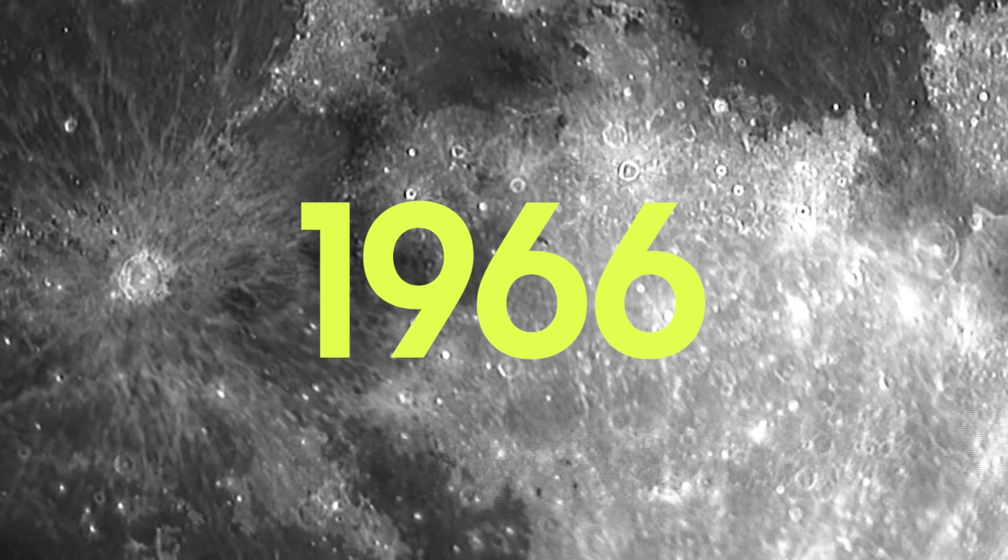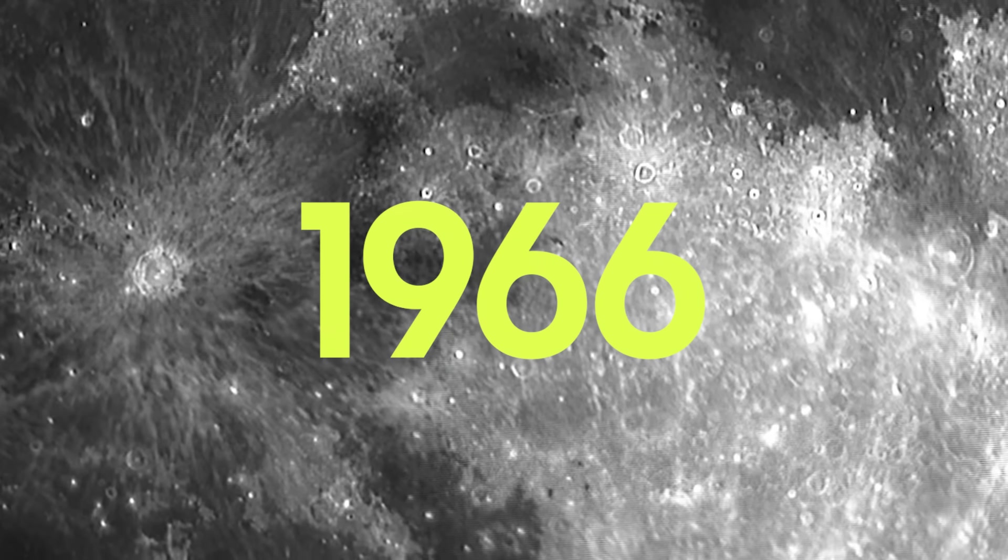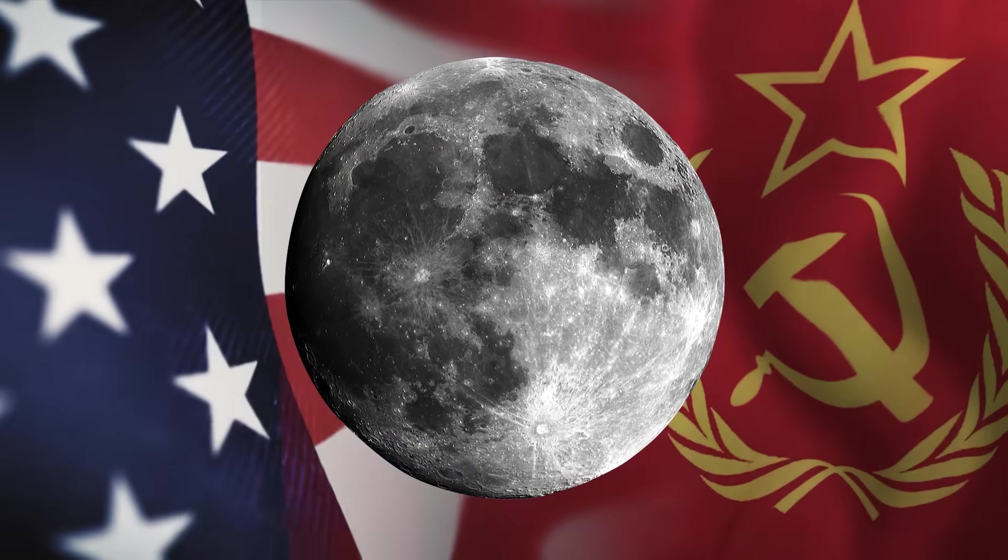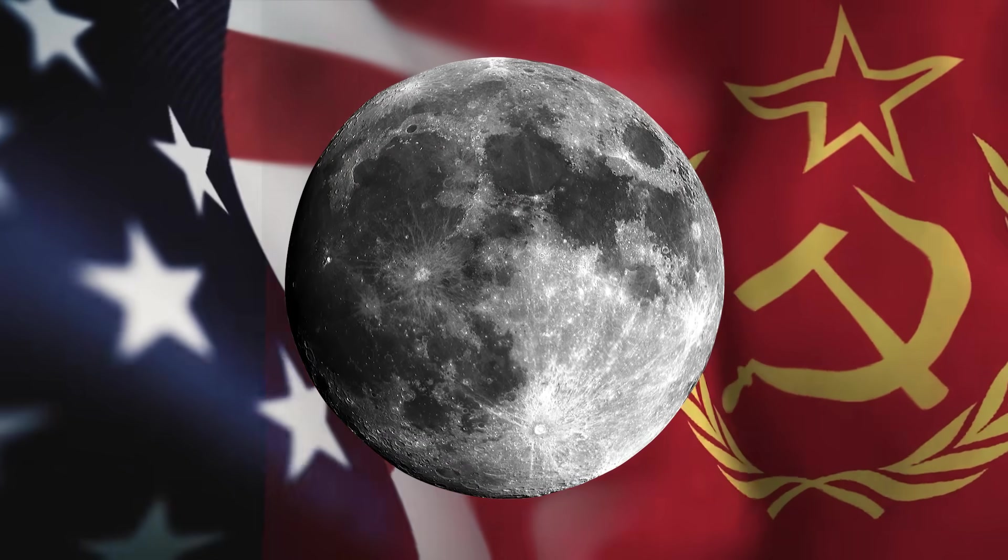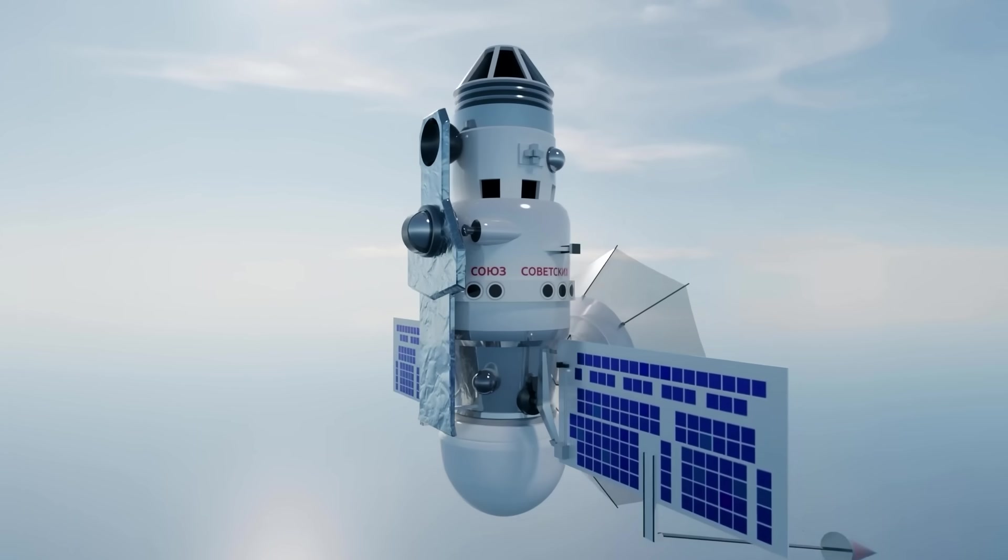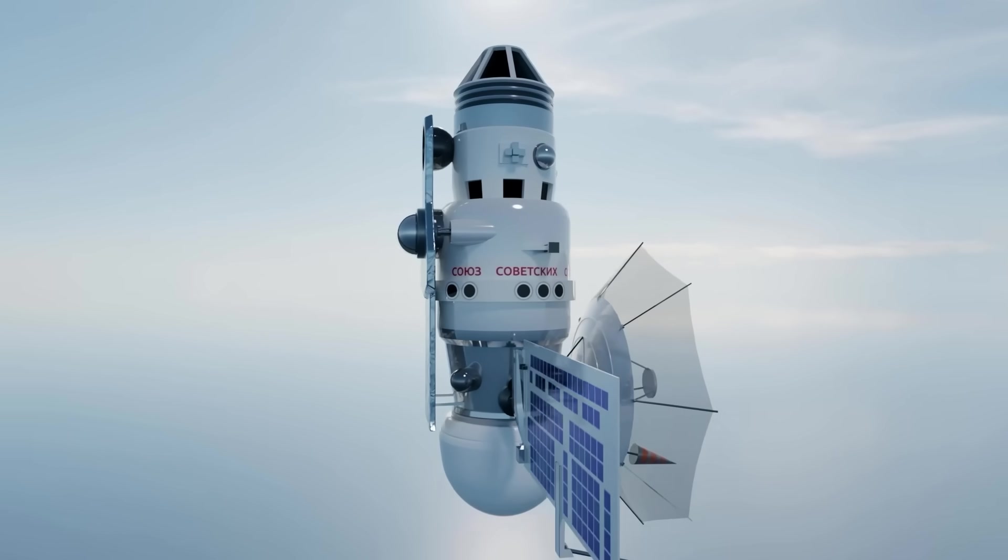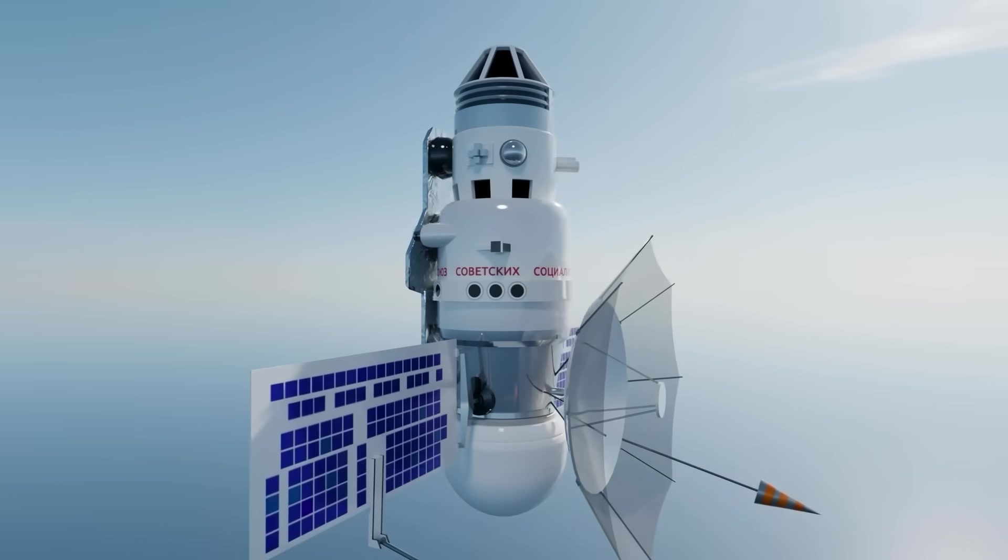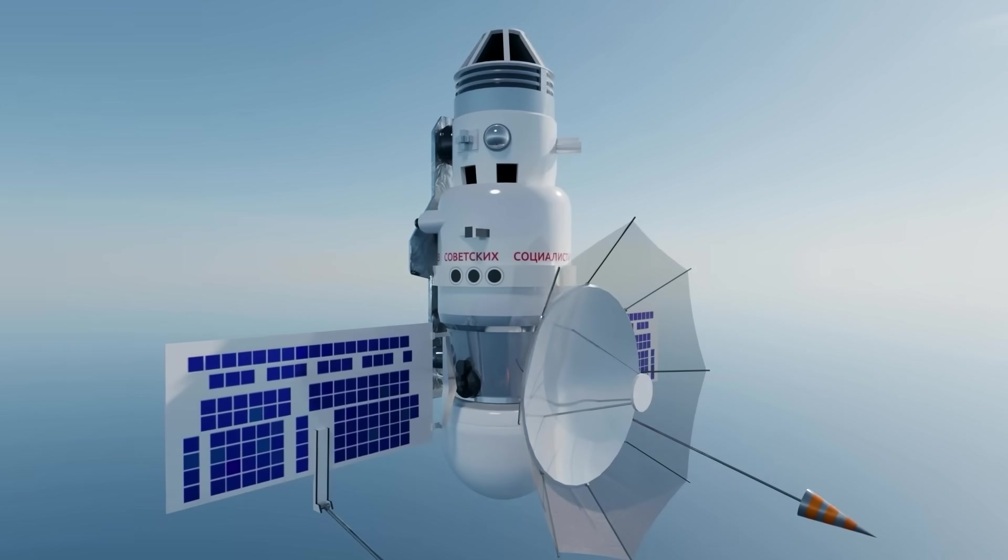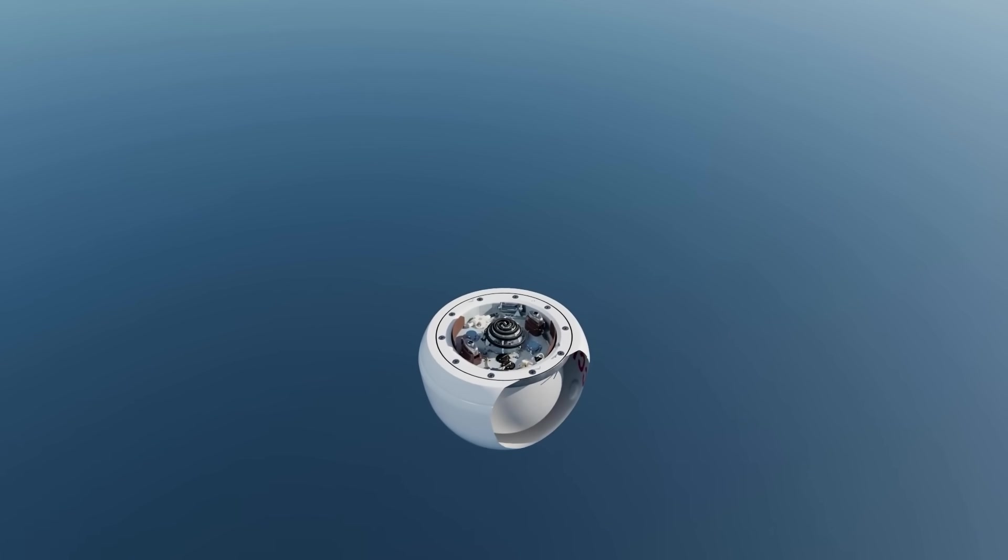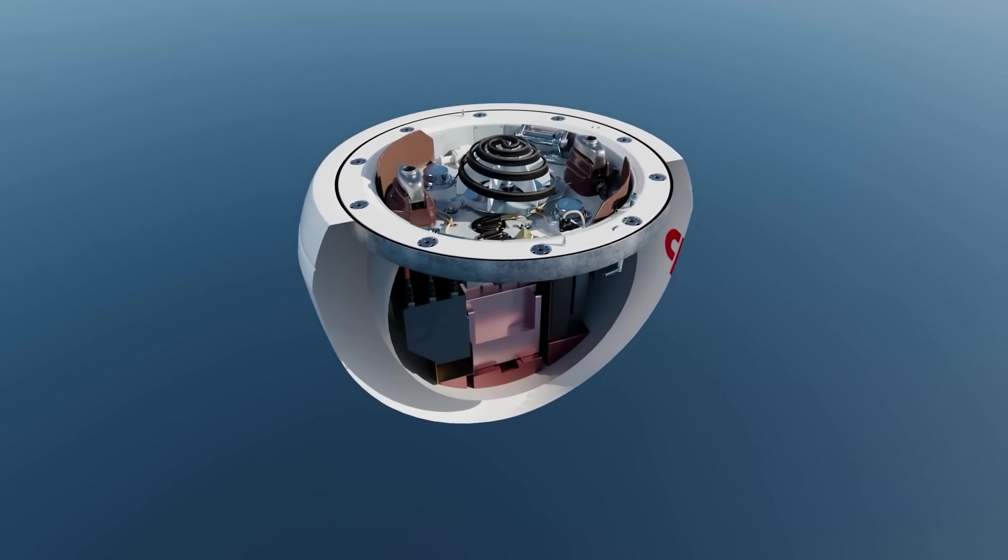The year is 1966, and we are already looking at an entirely different space race. The Americans have caught up, and landing people on the moon has become the top priority for both nations. But that doesn't mean the Soviets have forgotten about Venus. They've actually spent these four years building a bigger and tougher spacecraft for Venera 3 and 4. It's now weighing in at over 900 kilograms, up from about 650 on the previous generation.